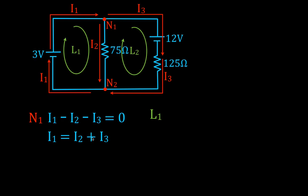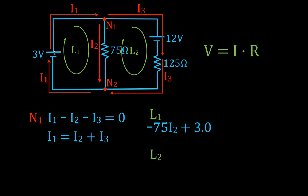Now we sum up the voltage drops and gains for each loop. For loop one, starting in the upper left corner, we come down through the branch and encounter the 75 ohm resistor. We're going with the current I2, so that's a voltage drop: minus 75I2. We go through the bottom, come back up, and encounter the 3 volt source going from negative to positive terminal — that's a voltage gain: plus 3. So the equation is: minus 75I2 plus 3 equals zero.